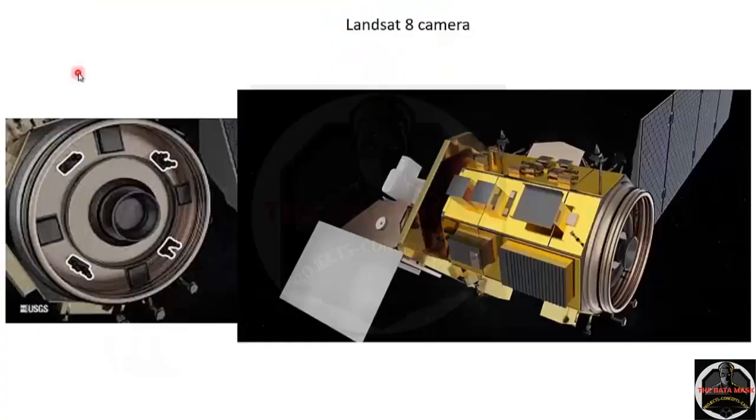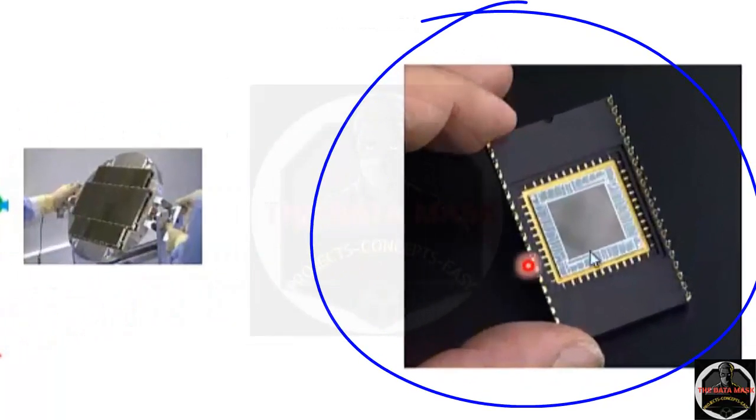Let us understand the sensor. I am taking the example of Landsat camera here. This is the Landsat satellite and this is the Landsat camera. If you see camera in a different angle, you can see that the optical camera is collecting electromagnetic radiance. They will strike to the CCD.